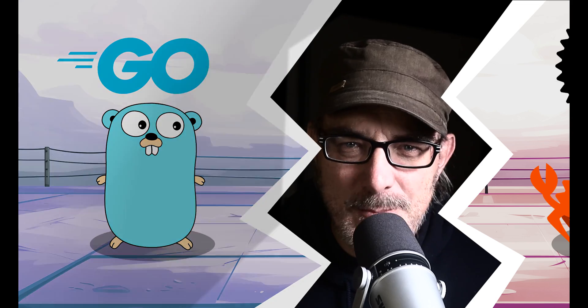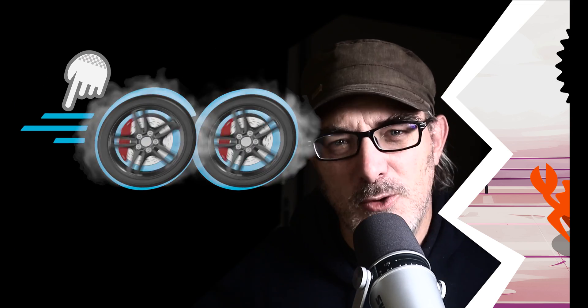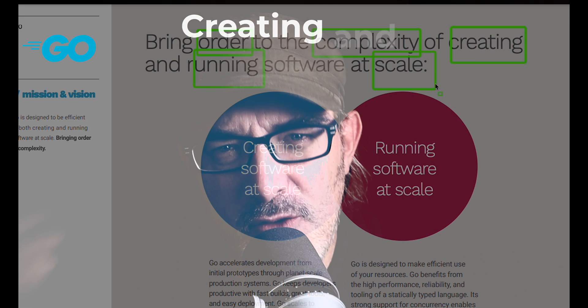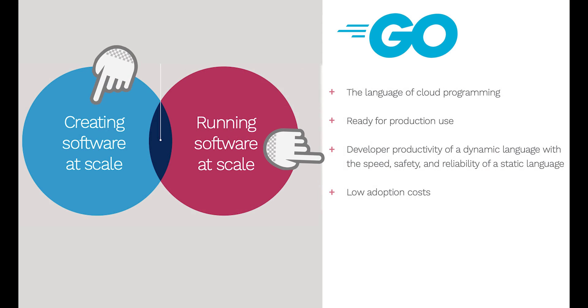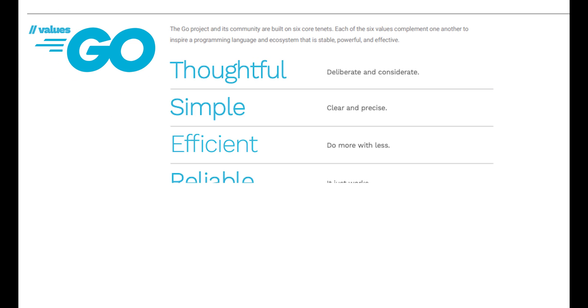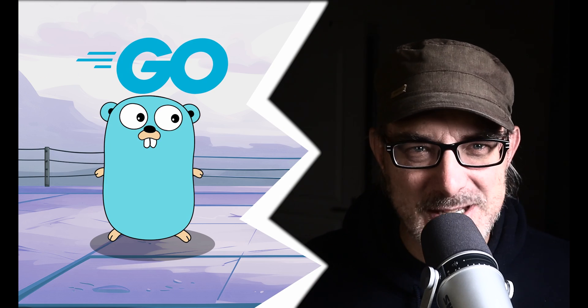Let's start with Go. Go's name and logo express speed and efficiency. The three lines make the text look like two wheels in rapid motion. Go's mission, as expressed by their brand book, is to bring order to the complexity of creating and running software at scale. Go's goal is to be simple enough to be used for prototyping and efficient enough to be the language of the cloud. Go's brand book also says it wants to be thoughtful, simple, efficient, reliable, productive, and friendly. These values are expressed in the friendly, cuddly mascot, the gopher.